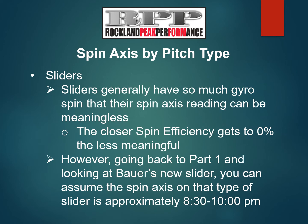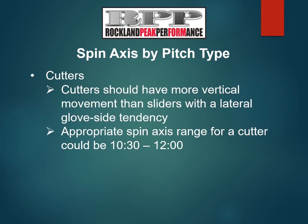Slider spin efficiency is where we talk about how sometimes lower efficiency is better. On a slider, we're looking for efficiency below 40%. We also like to see a spin axis in the 8:30 to 10 o'clock range. If you go back to Part 1, you can see what Bauer was talking about with a gyroscopic slider at 9 o'clock. When we talk about cutters, we like to see an axis in the 10:30 to 12 o'clock range — we want a lot more vertical lift on this than on the slider. Sometimes we tell right-handed pitchers to think about throwing a left-handed two-seamer as a cue.